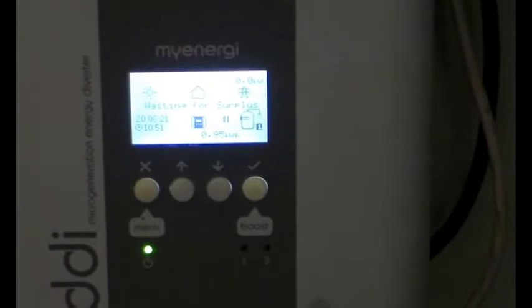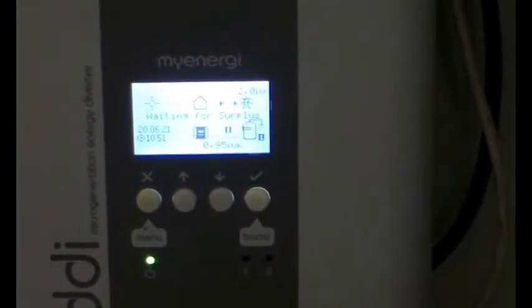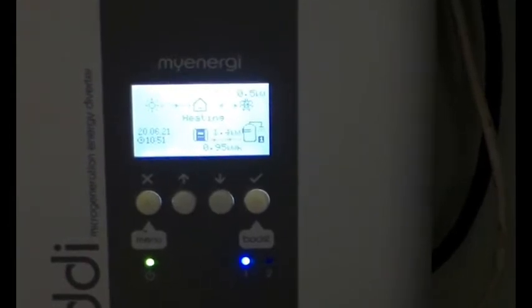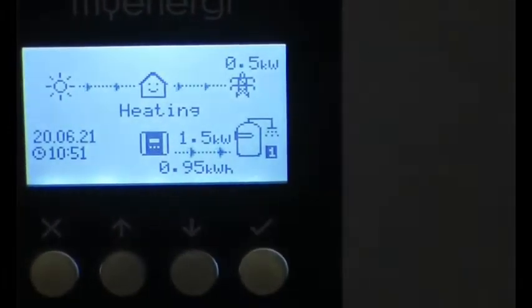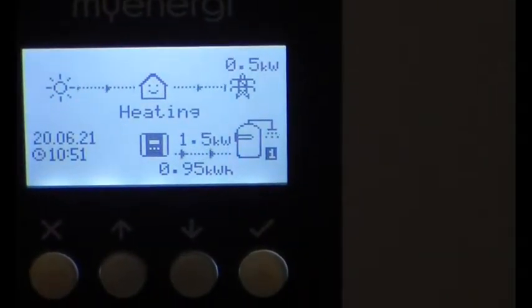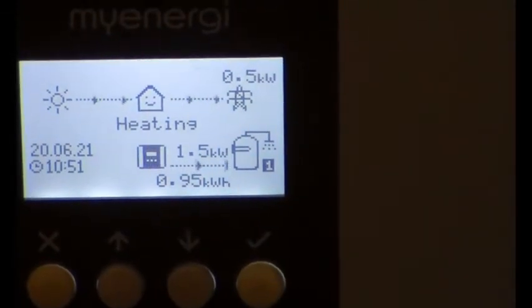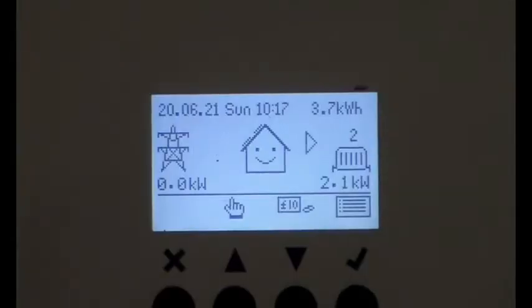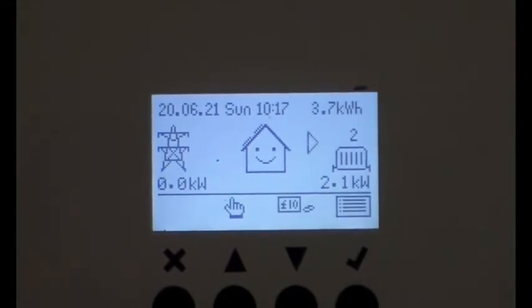Of course there is no surplus at the moment but as soon as the sun comes out there will be surplus beyond what the Emerson channel 2 can cope with. See, the Eddie is soaking up 1.5 kilowatts and the Emerson is 2.1, so there's no export because the Eddie is soaking it up, which is great.